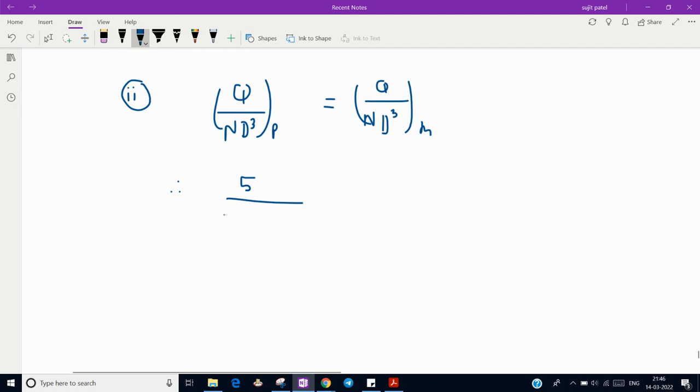Now we have value of Q for prototype, that is 5 meter cube per second, rpm we know is 400, and 1.2 cubed.